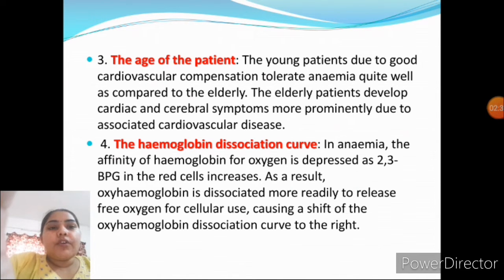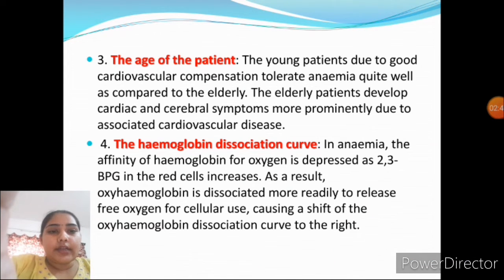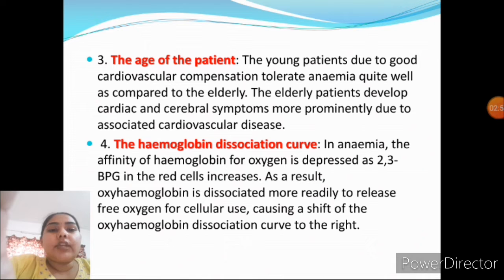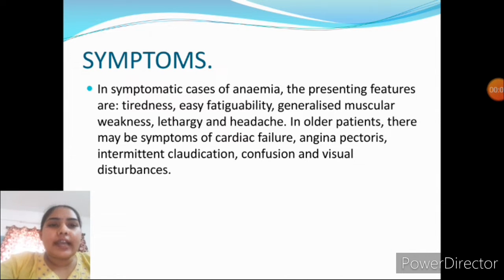Elderly patients develop cardiac and cerebral symptoms more prominently due to associated serious disease. Fourth is the hemoglobin dissociation curve — in anemia, the affinity of Hb for oxygen is depressed; 2,3-BPG in the red cell increases, causing oxyhemoglobin to dissociate more readily to release free oxygen for cellular use, shifting the hemoglobin dissociation curve to the right.